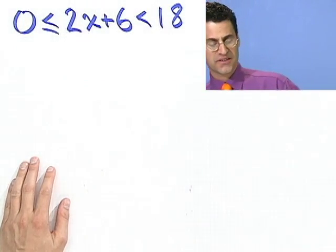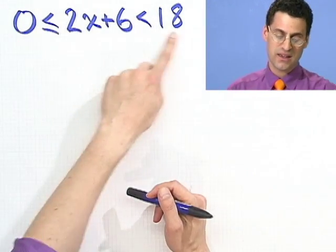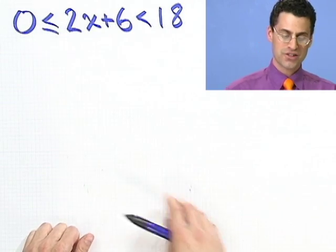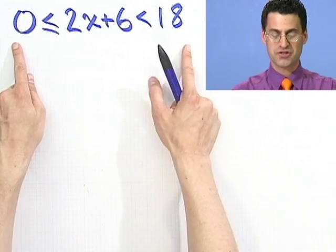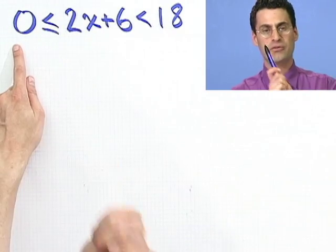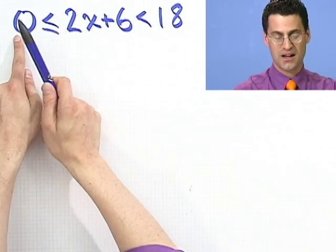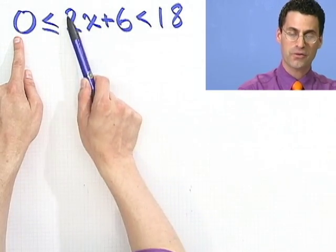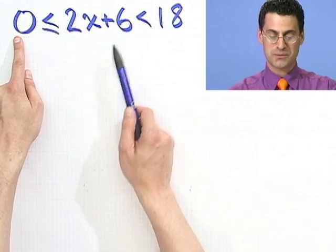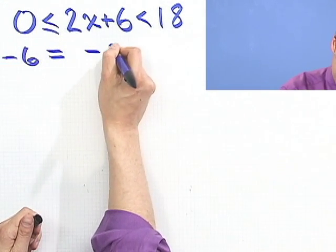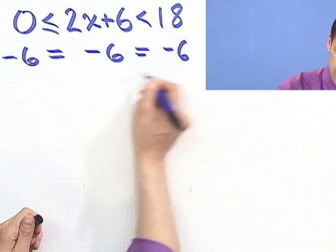The really neat thing about writing it this way is that solving this actually allows you to solve both inequalities at the same time. Just treat this thing as sort of one huge algebraic string. Whatever you do though, don't think of one side, think of three sides. So whatever you do to one side, you do to the other sides. So for example, if I want to solve for x, the first thing I would do is subtract 6. But I subtract 6 from everything. So I subtract 6 from here. It's like a balanced scale with three arms.